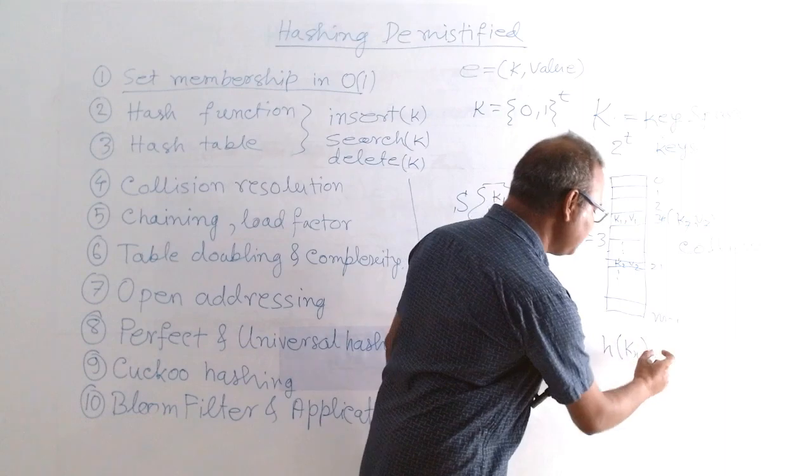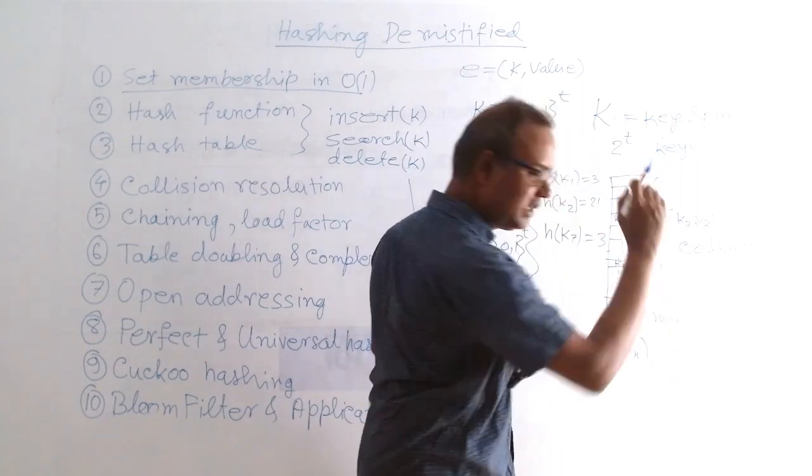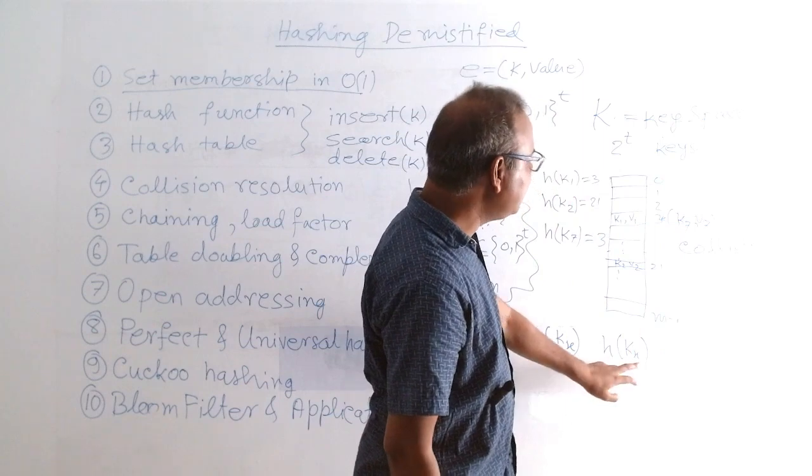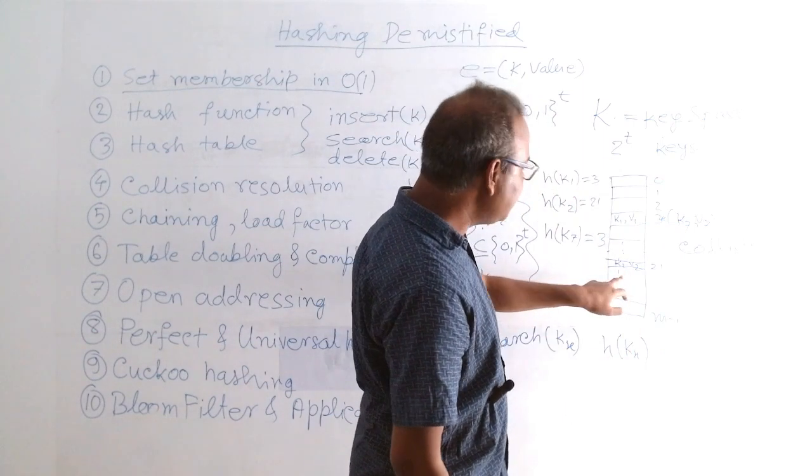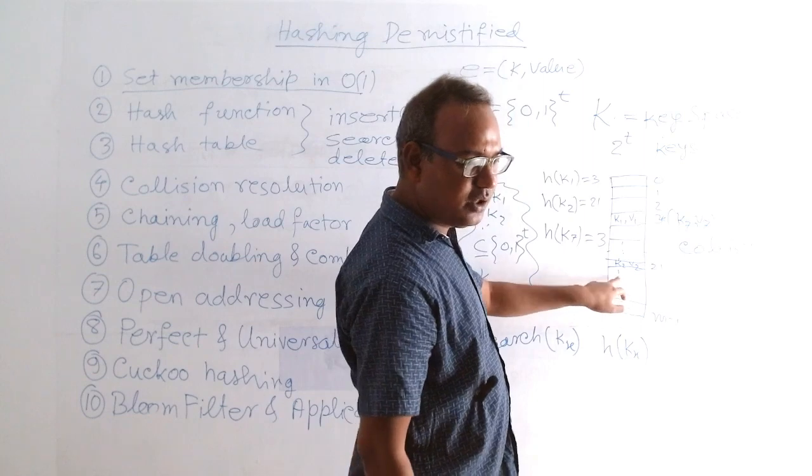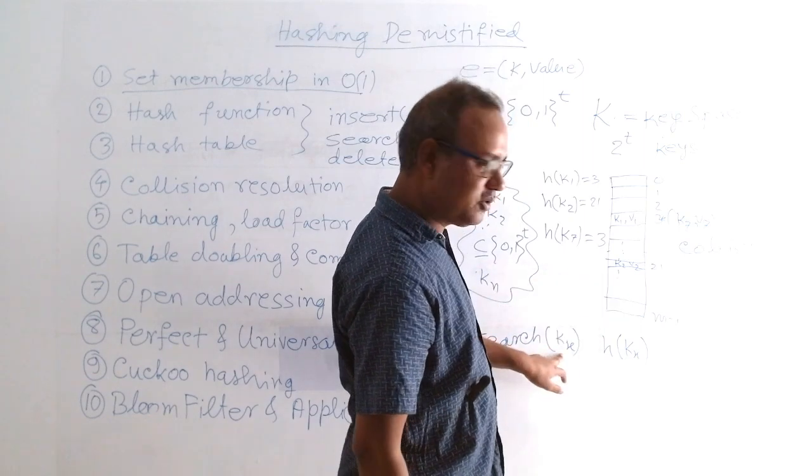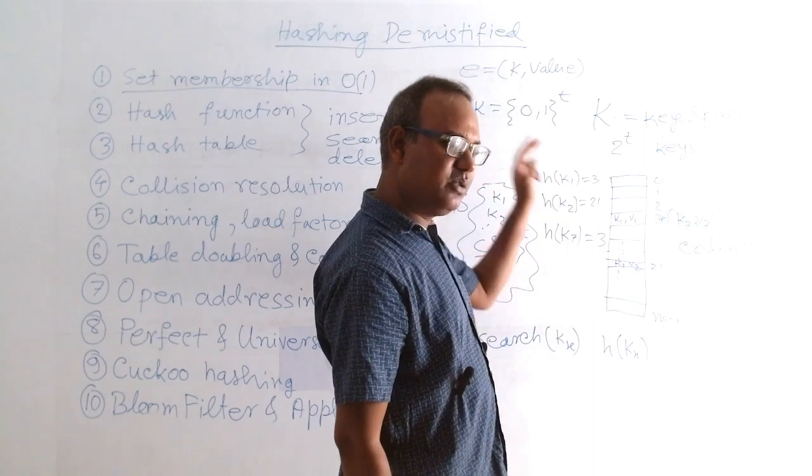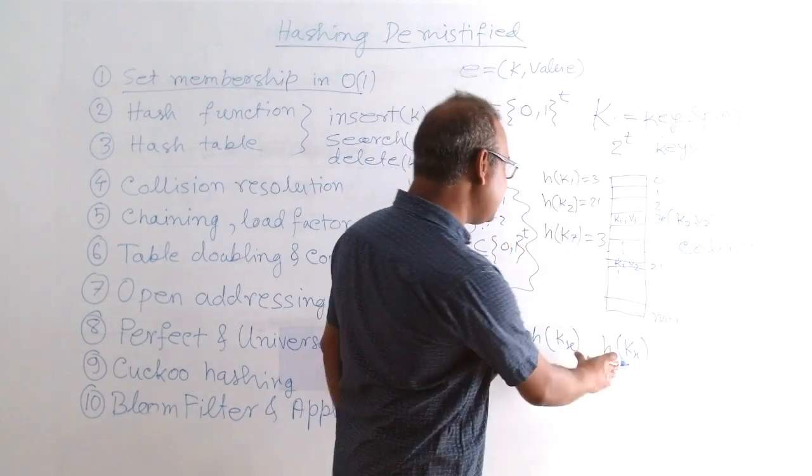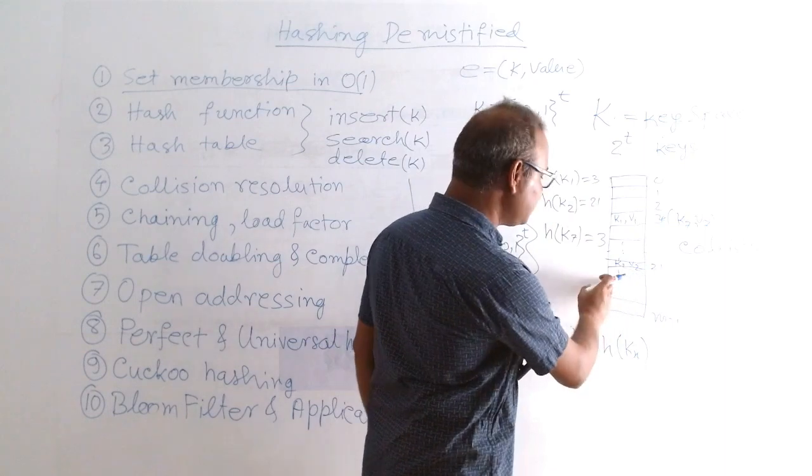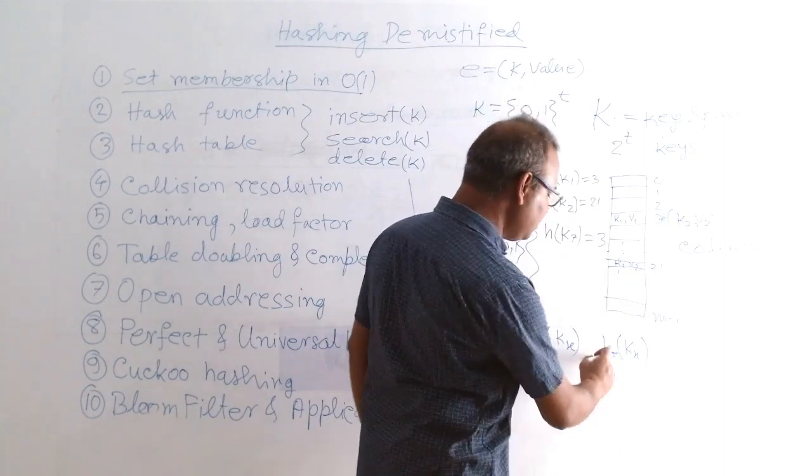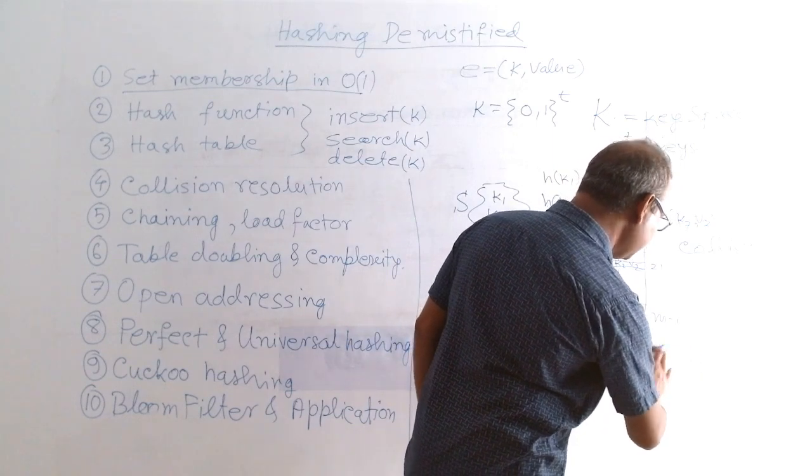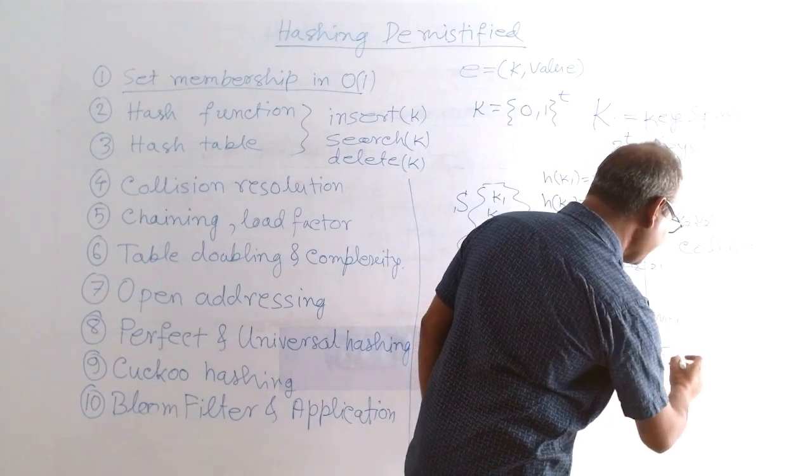That will give us some value between 0 to m-1. Whatever the value may be, that will be in some place. If we find some element there, we will say kx is found and we will return the value. Key value pair, return. And if the element is missing, that slot is empty, corresponding to h of kx.